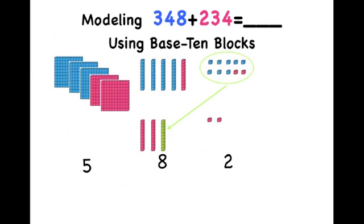So the sum of our equation, 348 plus 234 is 582.